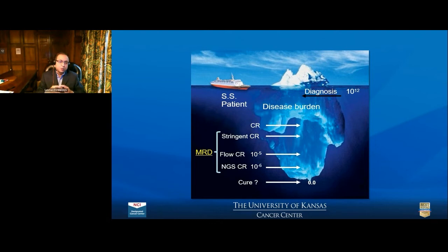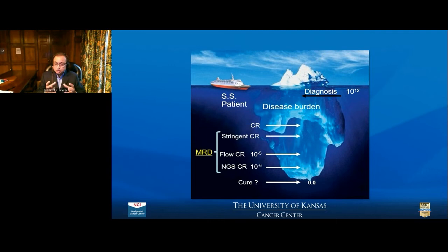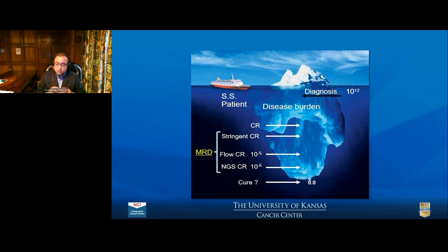With a patient's presentation, the body probably has almost a trillion cancer cells — the proverbial iceberg model — where you can see symptomatic myeloma, but deep down, even in stringent complete remission, we still have significant myeloma cells. Our goal is to push it down further to almost undetectable — one in a million, like an NGS CR — and eventually push toward cure. Our goal is MRD negativity — minimal residual disease negativity.